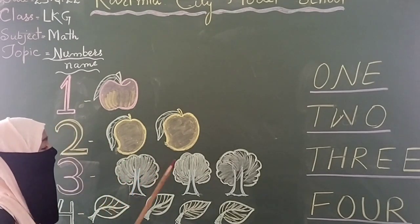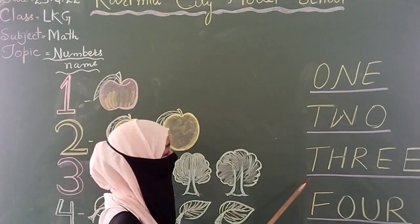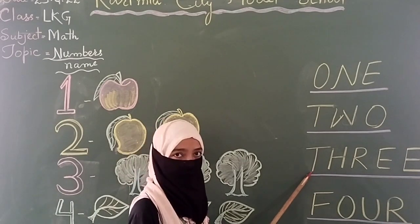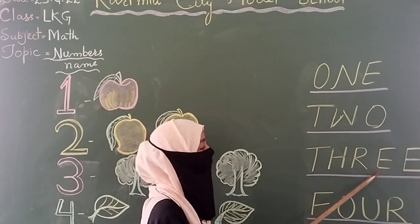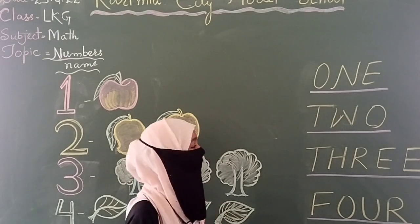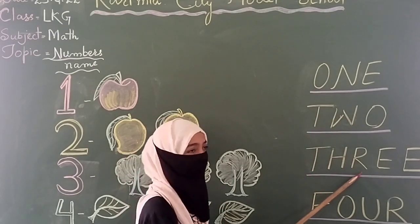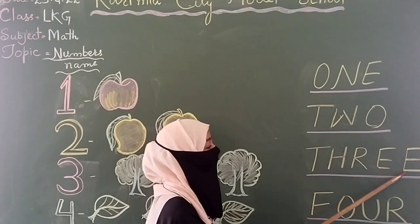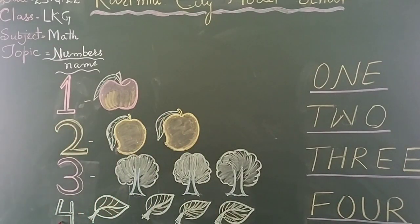Now say the spelling with me: T-H-R double-E, three. Again: T-H-R double-E, three. Now see, what is this? It's a four.